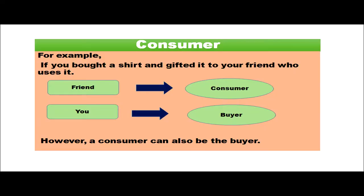For example, if you bought a shirt and gifted it to your friend who uses it, your friend is the consumer and you become the buyer because you paid the money. However, if you use the shirt yourself, you become the consumer also. So a consumer can also be the buyer.